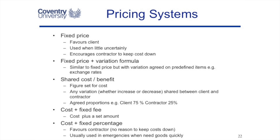There are some other pricing systems. A pricing system with a variation formula would be useful if your contract depends on an exchange rate — a dollar-pound or dollar-euro exchange rate — or is based on the oil price, where we've got a fixed price but we're dependent on how much the oil price changes. So different pricing systems are available.